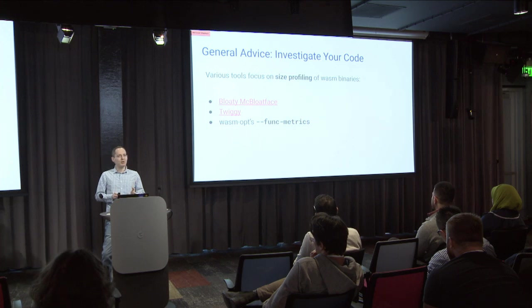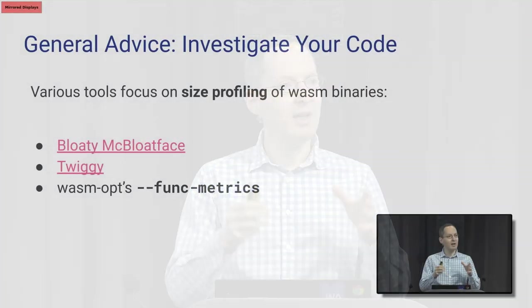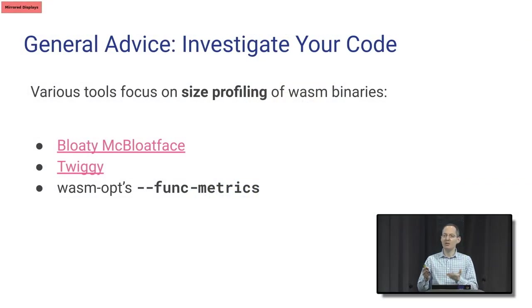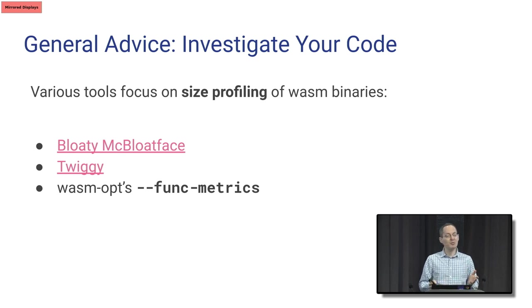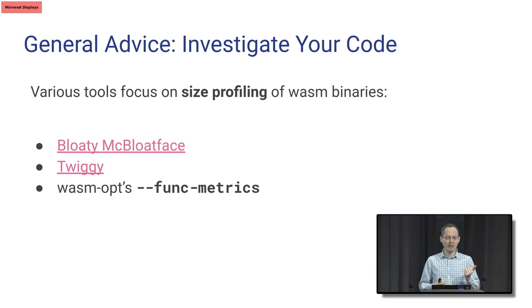Another piece of general advice: investigate your code — do size profiling, look at what's in the binary, see if maybe there are things that shouldn't be there or could be smaller. There's a bunch of tools that can help. There's Bloaty, a general-purpose tool for code size that looks at binaries with WASM support. Two other tools are Twiggy from the Rust community, and wasm-opt has a func-metrics pass. These can all be quite good at finding surprising things in your code that maybe you weren't aware of.